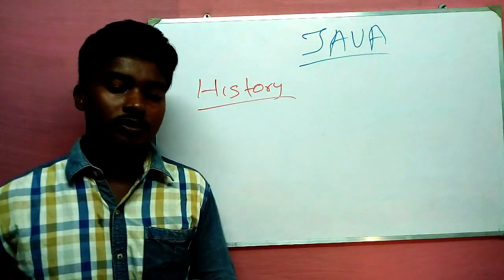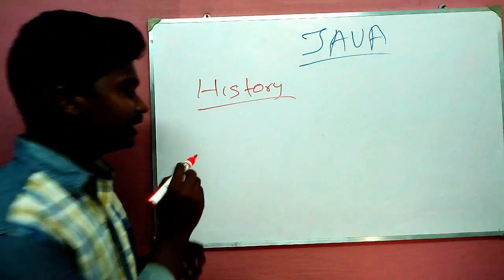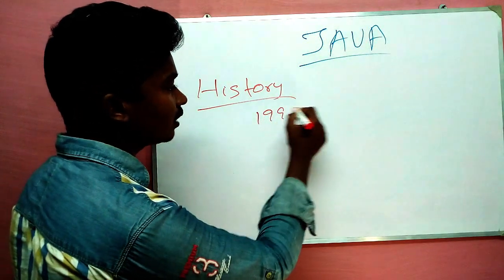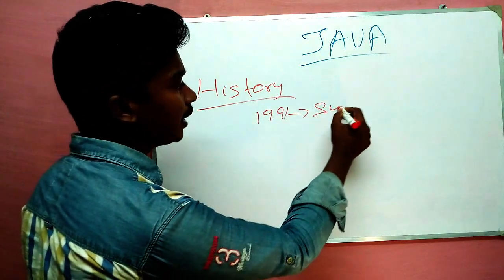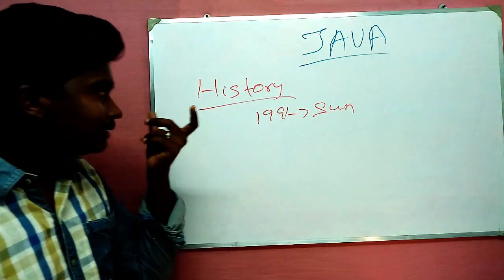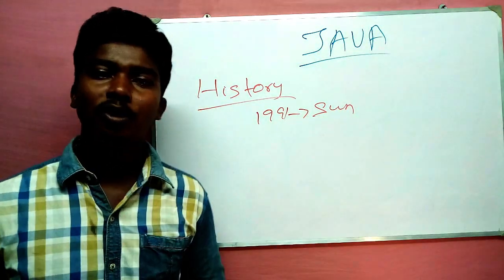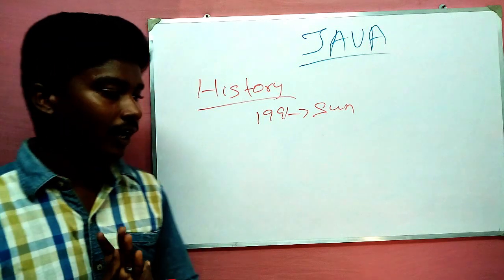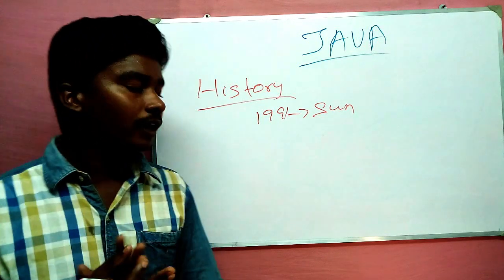What is Java history? Java is developed in 1991 by Sun Microsystems. We will talk about what Java programming language is.